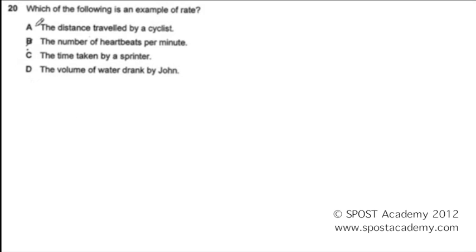So let's look at all four options. A: the distance traveled by a cyclist. There is only one quantity, so A is not the correct answer.